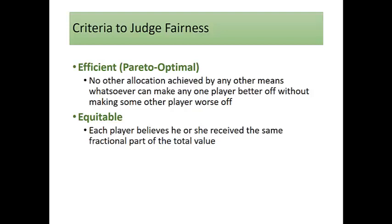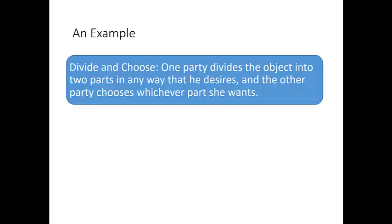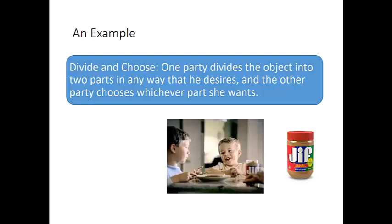These four criteria are just things to keep in the back of our minds and ways that we can judge whether or not a division is said to be fair. One example of a division procedure is called divide-and-choose. In divide-and-choose, one party divides the object into two parts in any way that he desires and the other party chooses whichever part she wants. This method was famously used in a Jif peanut butter commercial — you can actually google it and watch it.